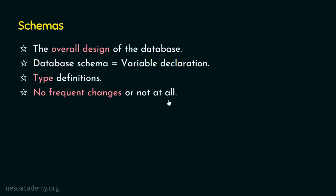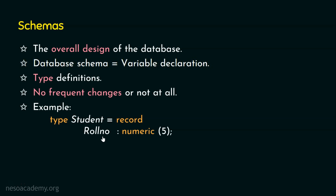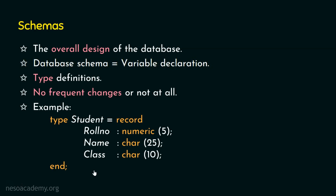If there is a requirement to change the schema, the database administrator can change it. Let me show you an example type definition. We are going to define a record type of student. The first field is the roll number, which is of numeric type with a maximum size of 5. The second field is the name of the student, of character type with a maximum size of 25 characters. The last field is the class, also of character type with a maximum size of 10. This structure is not frequently changed, and that's why schemas are like the structure or overall design of the database.